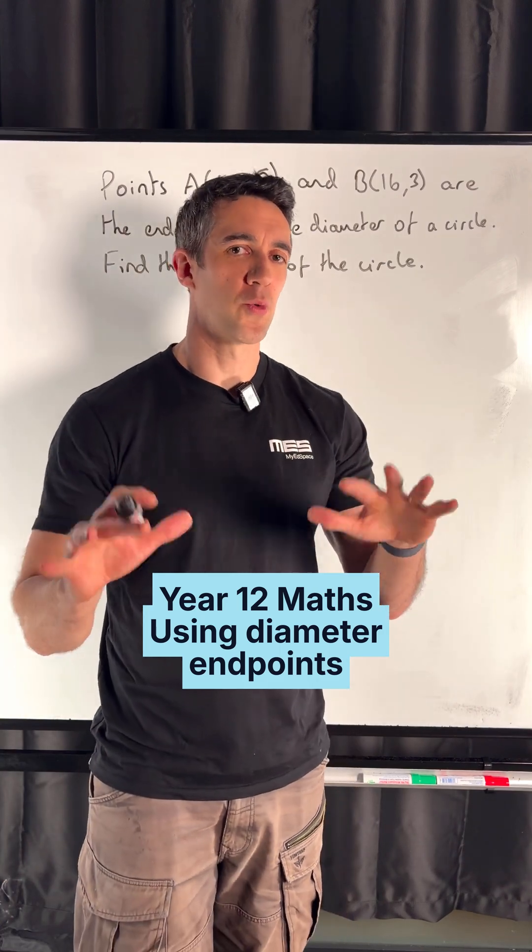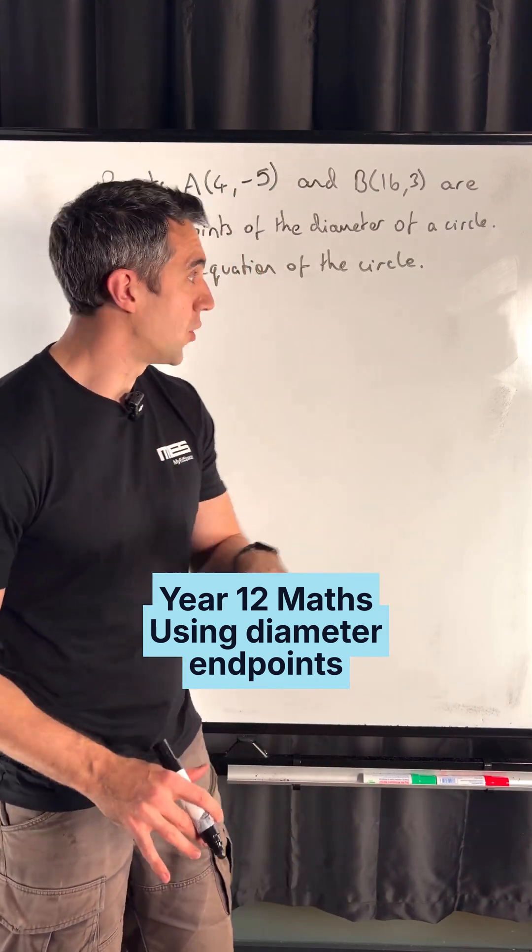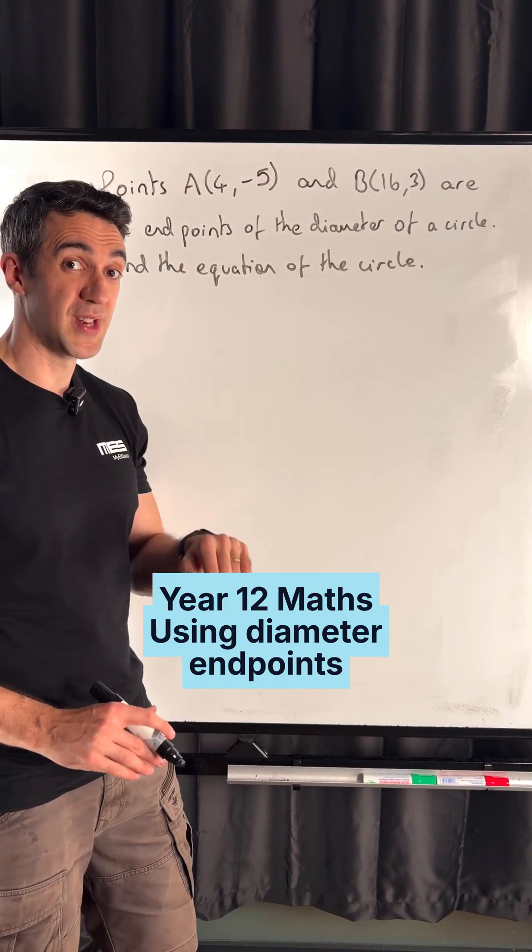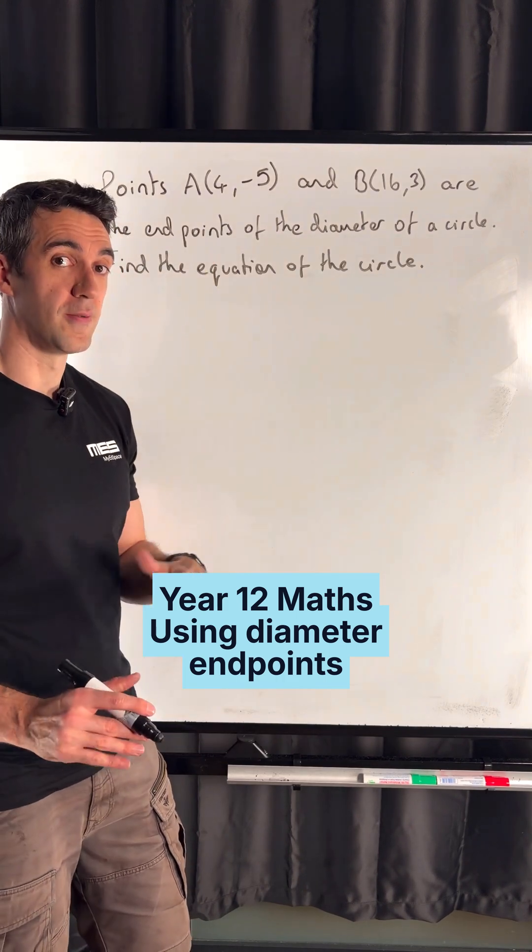Year 12 mathematicians, here's a quick check of coordinate geometry skills involving circles. We're going to find the equation of a circle when given two points A and B, which are the endpoints of the diameter.